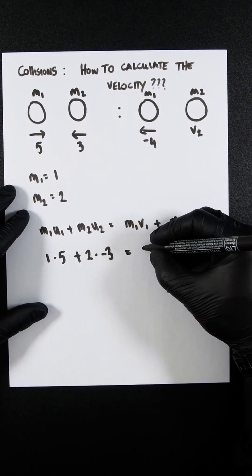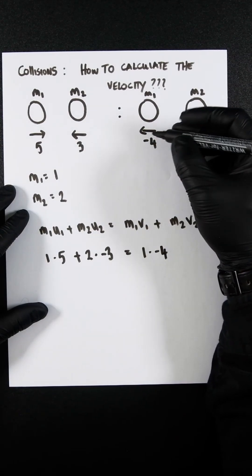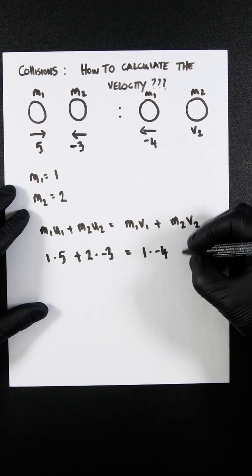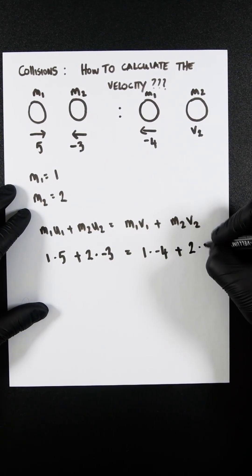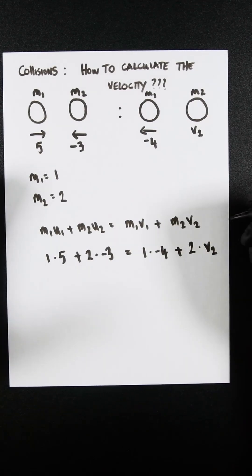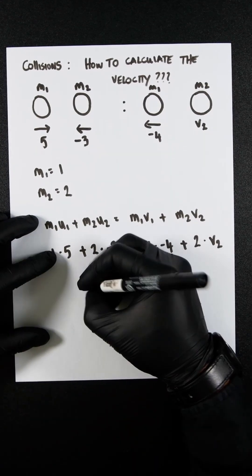Then you're going to have M1, which is 1, times minus 4, because it's going left. I'll put a minus there as well. And then add M2, which is 2, dot V2. Now it's a case of simply cleaning up, rearranging, and you'll find out what the velocity is.